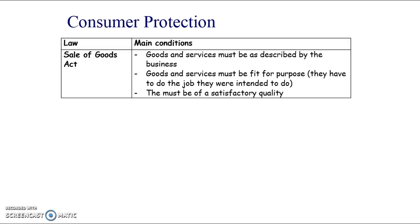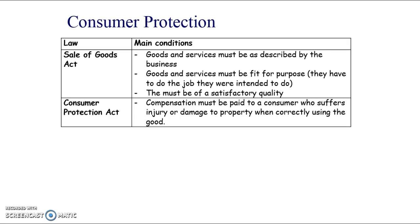Goods and services must also be fit for the purpose they were intended to do. Going back to the kettle example, it's got to be able to boil water, contain the water, and have a satisfactory quality. Different items have different quality requirements - disposable razors wouldn't be expected to last a year, but a kettle would be expected to last two to five years.